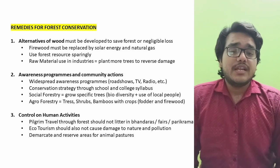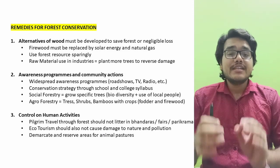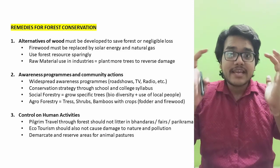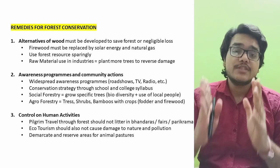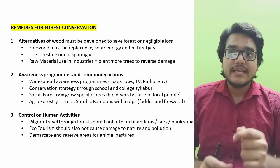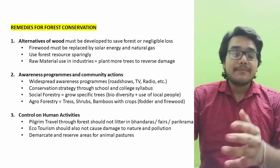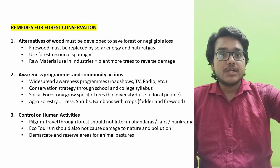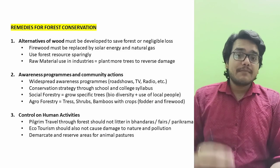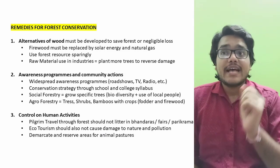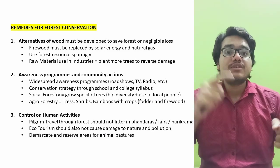The next point is awareness programs and community actions. We need widespread awareness programs so people understand that cutting trees causes global warming and destroys natural habitats. When people understand this, they will change their behavior. The second point is that conservation strategy should be taught to students through school and college syllabuses. When you study this chapter and grow up, you will think twice before harming the environment, ensuring the next generation does not repeat the same mistakes.